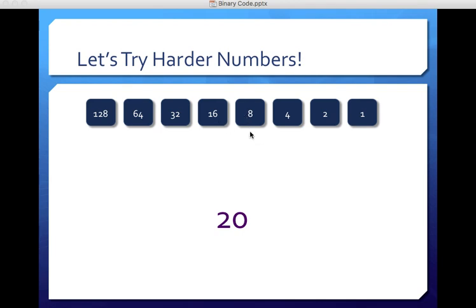Four, 16 plus four is 20, so a one here, and then zeros because we're already there. So we have a 16 and a four, and zeros across the rest.